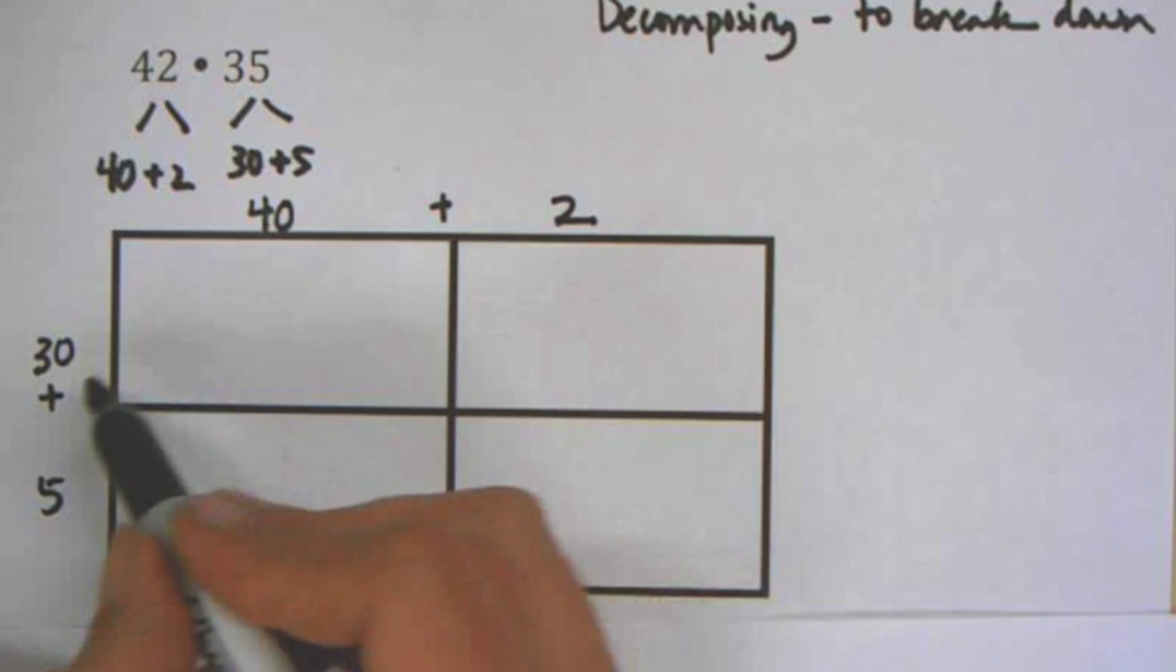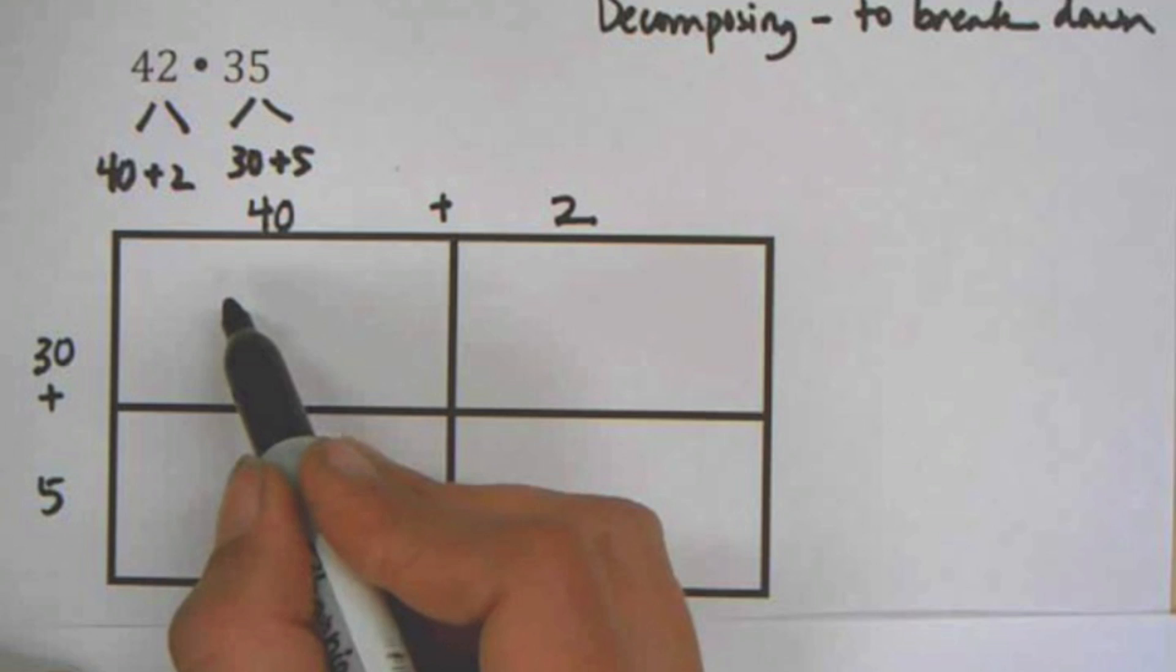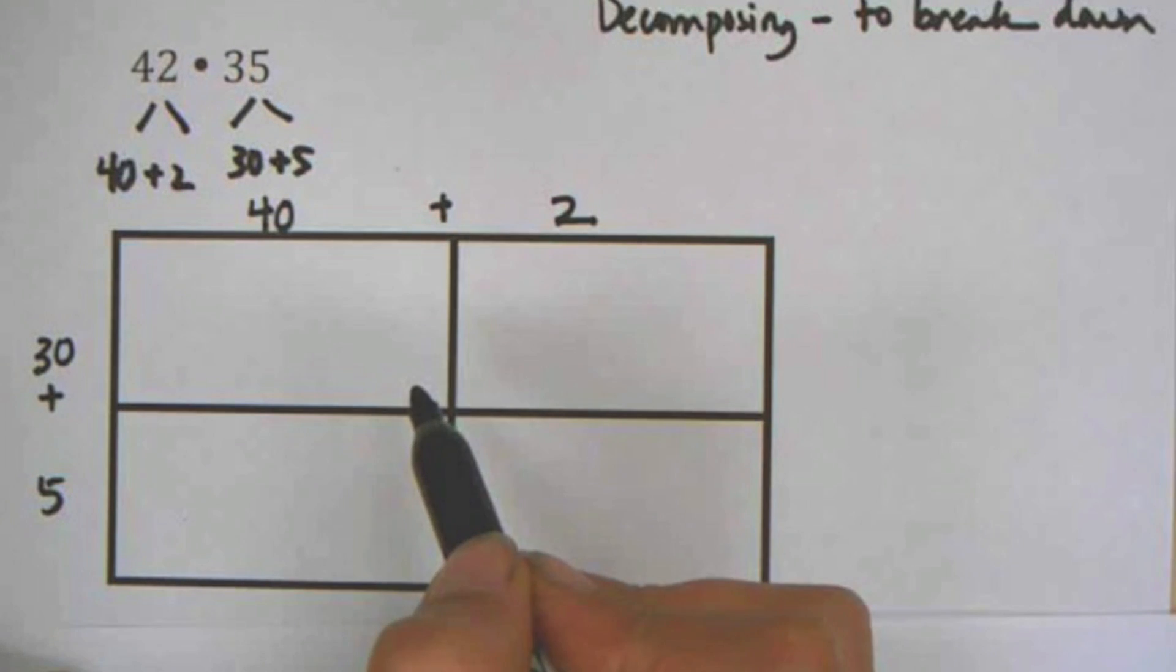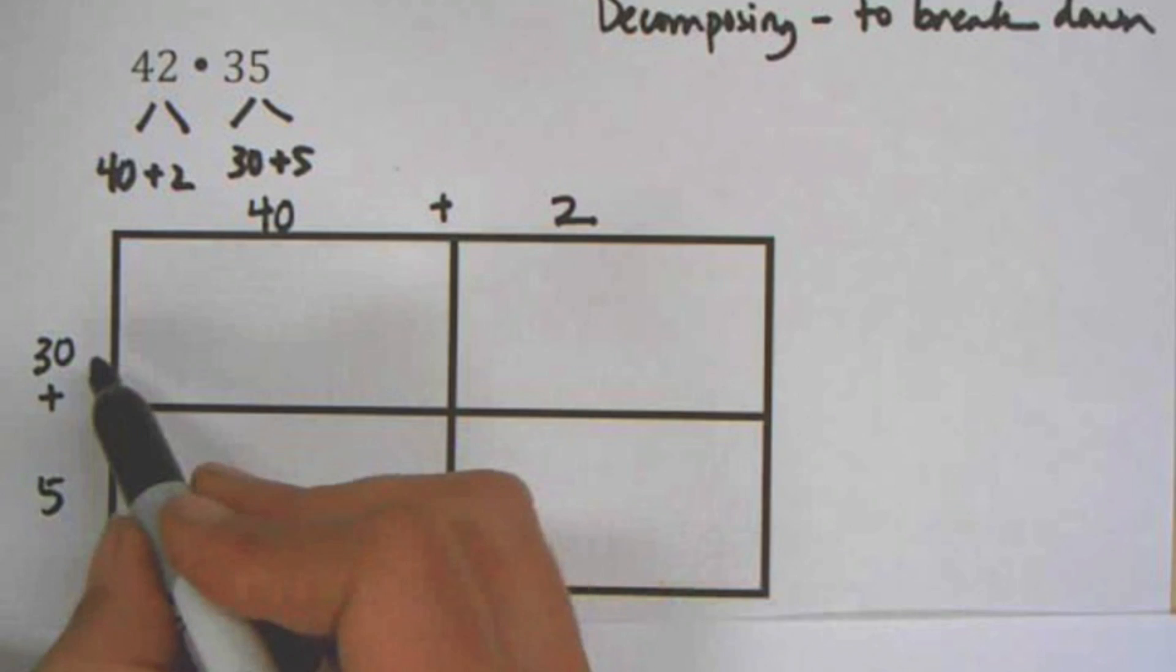And the other side will be the 30 plus 5. And what we're going to do is we're going to multiply each kind of piece together, and then we're going to add those pieces back together. So we're kind of breaking it down, and then we're going to build it back up.